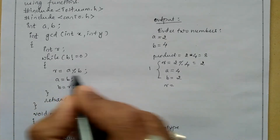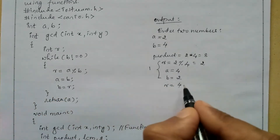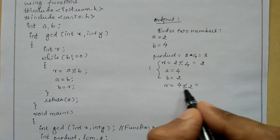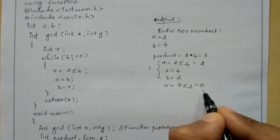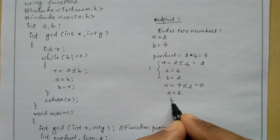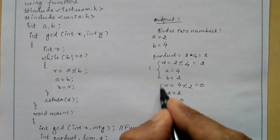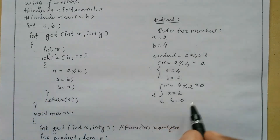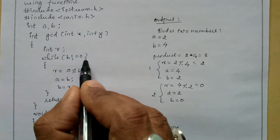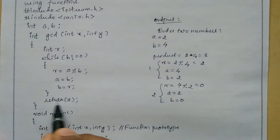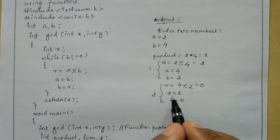In the second iteration, r equals a modulo b: a is now 4, b is 2. Four is exactly divisible by 2, so the remainder r equals 0. Then a equals b equals 2, and b equals r equals 0. Control returns to the while condition: b is now 0, and 0 is not equal to 0 is false. The condition is false, so control exits the while loop and the function returns the value of a, which is 2.